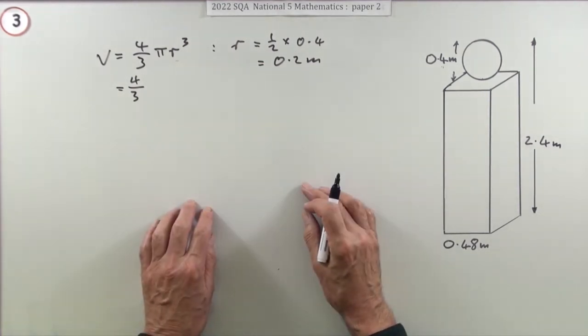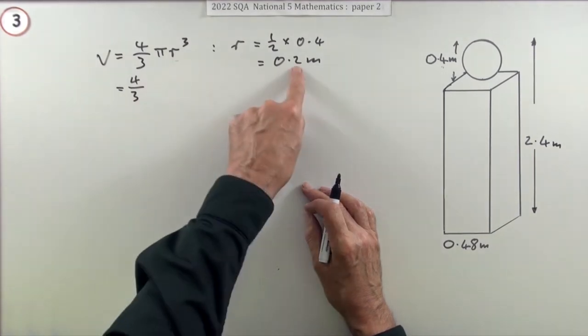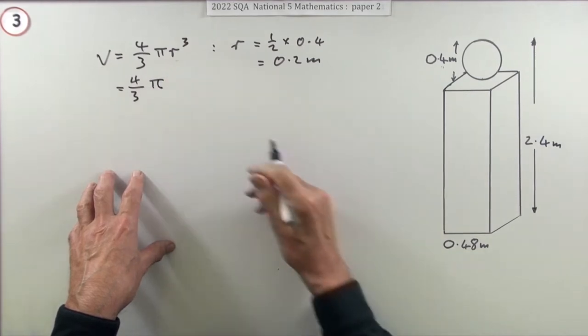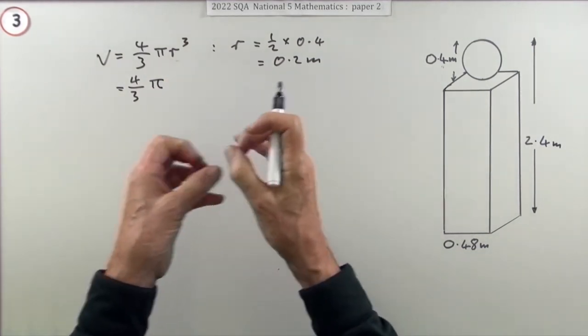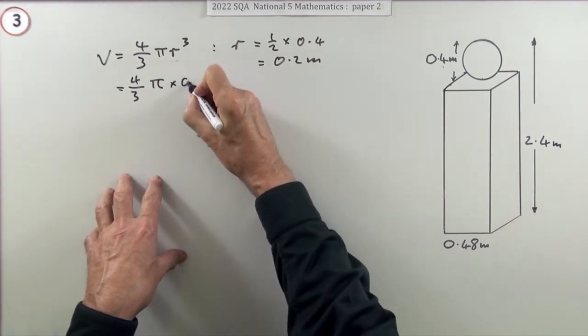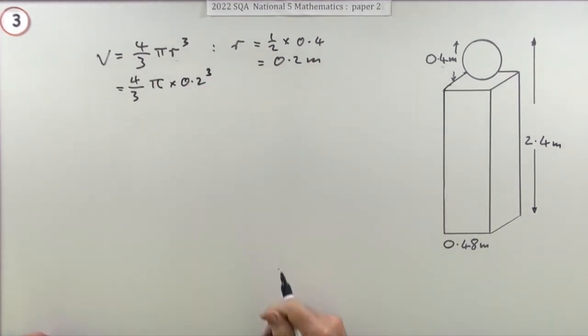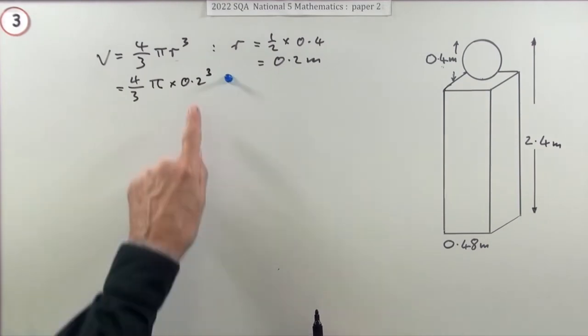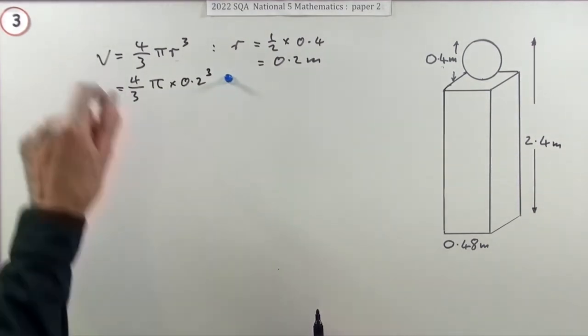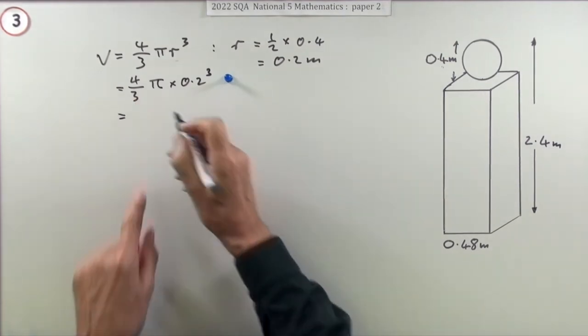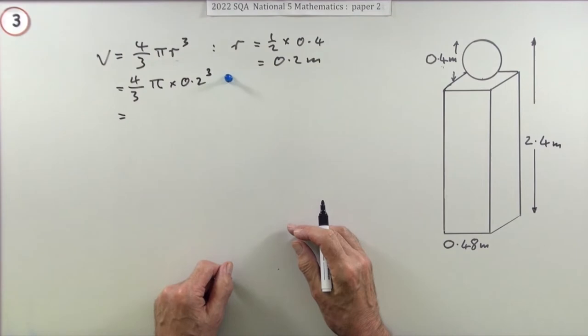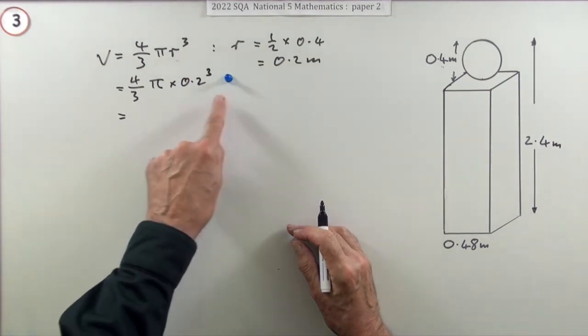Pop them into the formula: 4/3 π times 0.2³. Leave π alone. If you put in 3.14 you've immediately introduced a rounded off number which limits how many figures you can put into your answer. Just keep it as exact, assuming the calculator is holding an awful lot of that.